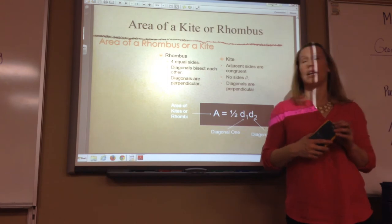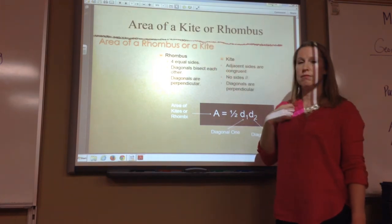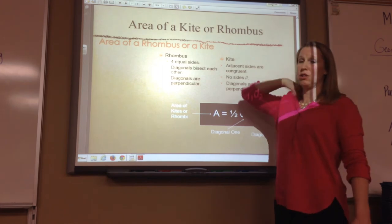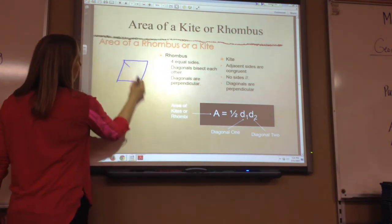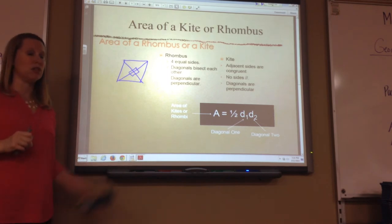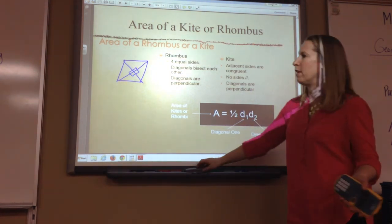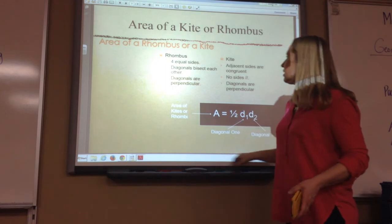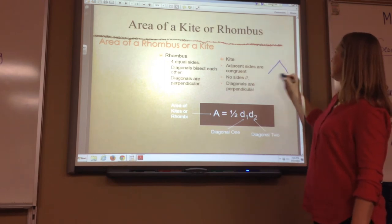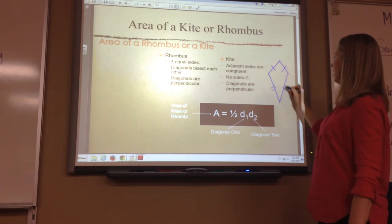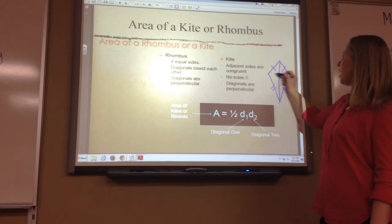A rhombus and a kite — area is one-half d1 times d2. Remember, on a rhombus all four sides are equal, the diagonals bisect each other, and diagonals are perpendicular. So on rhombuses the diagonals are perpendicular, meaning all right angles, which means you could possibly have to do Pythagorean theorem, or even 30-60-90 or 45-45-90 triangles. On a kite, same way — diagonals are perpendicular, so you have right angles. No sides are parallel on a kite. These two sides equal each other and those two sides equal each other. The formula is one-half d1 times d2 — multiply the diagonals and divide by two.